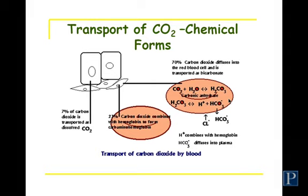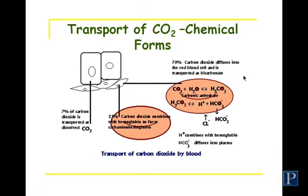Carbon dioxide that's dissolved in plasma will eventually come into the red blood cell, where it combines with water to form carbonic acid. That dissociates fairly quickly into bicarbonate, which is a negatively charged ion, and a hydrogen ion.